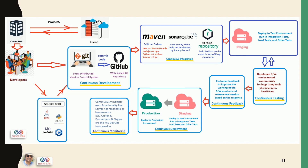Once you have deployed your software or package into the production environment, it requires monitoring. You can monitor the server, the package, and subsystems like CPU, memory, and disk utilization — many things can be monitored on the servers using tools like ELK, Grafana, Prometheus, and Nagios. These are the important tools that come under continuous monitoring. This is all about the DevOps lifecycle. With this diagram, you can easily correlate each DevOps lifecycle phase and understand what tools come under each phase.